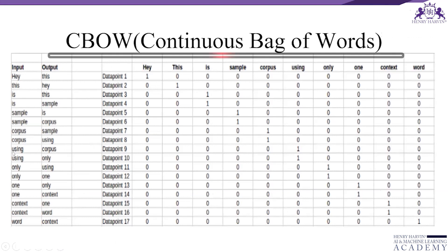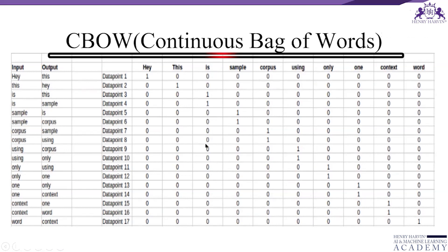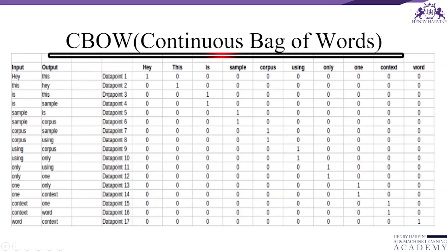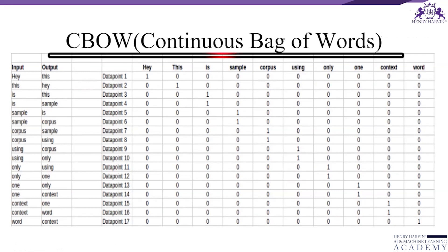The corpus is converted into a training set for the CBOW model. The input is shown as a one-hot encoded matrix. This matrix is sent through three layers: the input layer, the hidden layer, and the output layer. The output layer is a softmax layer, which is used to normalize the probabilities in the output layer to sum to one.